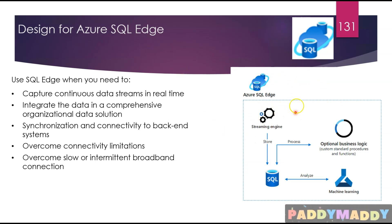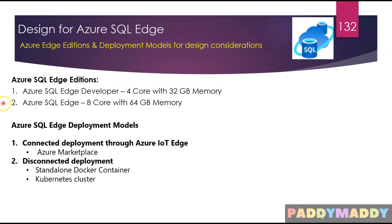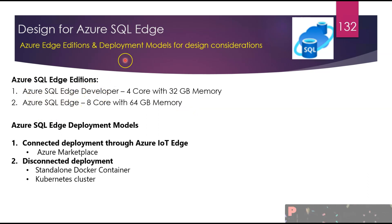Azure SQL Edge is available in two different editions. The first is the Azure SQL Edge Developer Edition, used mostly for developing applications with limited CPU power — four cores and 32 GB of memory. When moving to production applications, you would use Azure SQL Edge, which offers double the performance: eight-core CPU with 64 GB of memory. One edition is for development, the other for production.